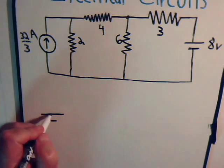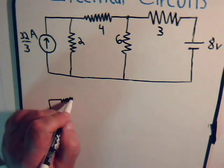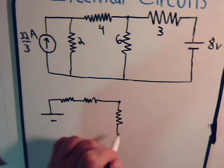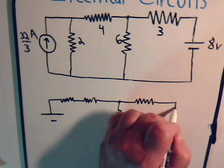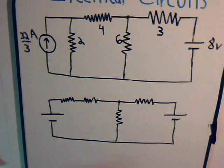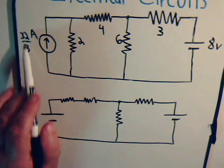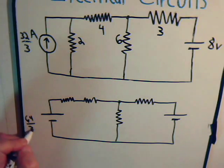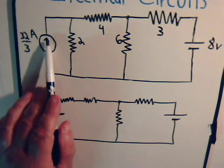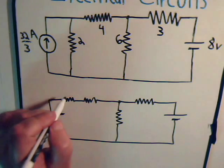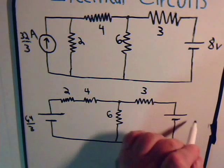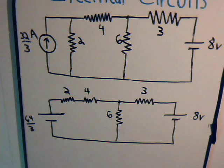The 2-ohm resistor would be in series with this. Now we have redrawn the circuit. This resistor has a value of 64 ohms, in the same direction that our current source was. Here's the 2-ohm resistor, the 4-ohm resistor, the 6-ohm resistor, the 3-ohm resistor, and our 8-volt voltage source.